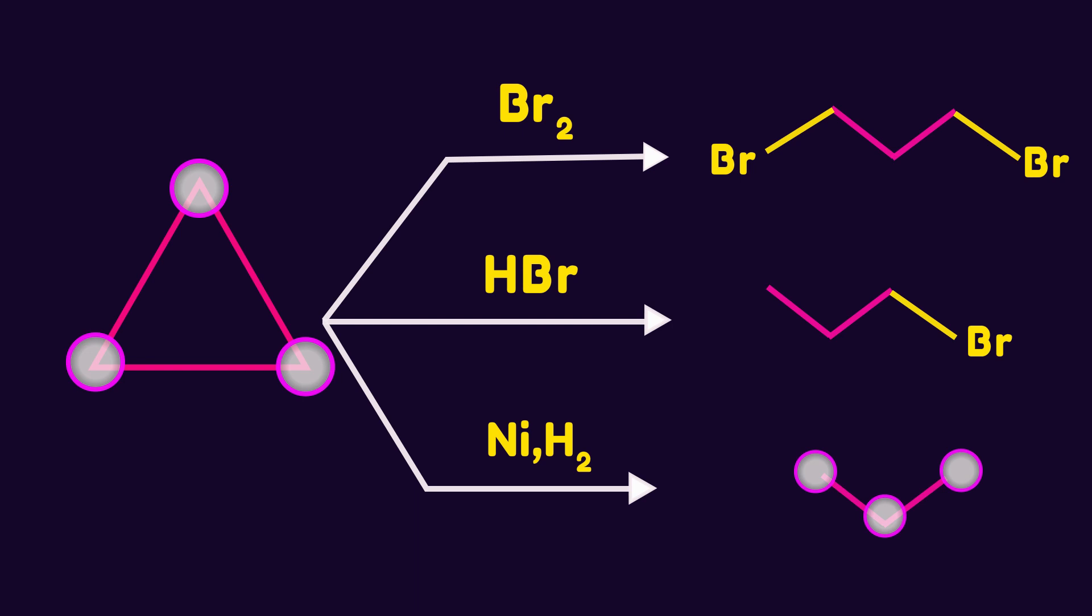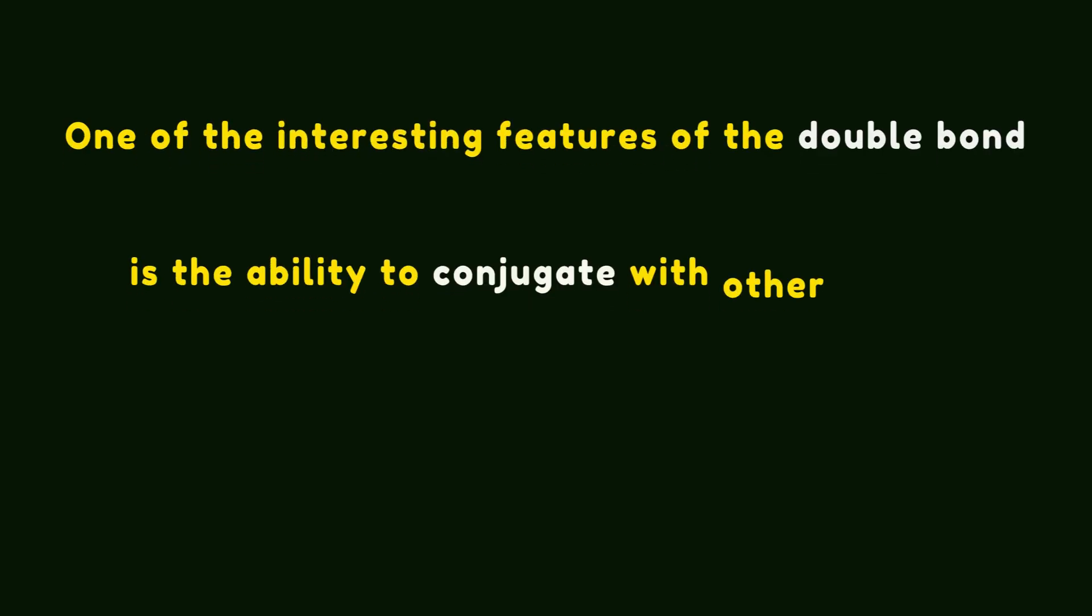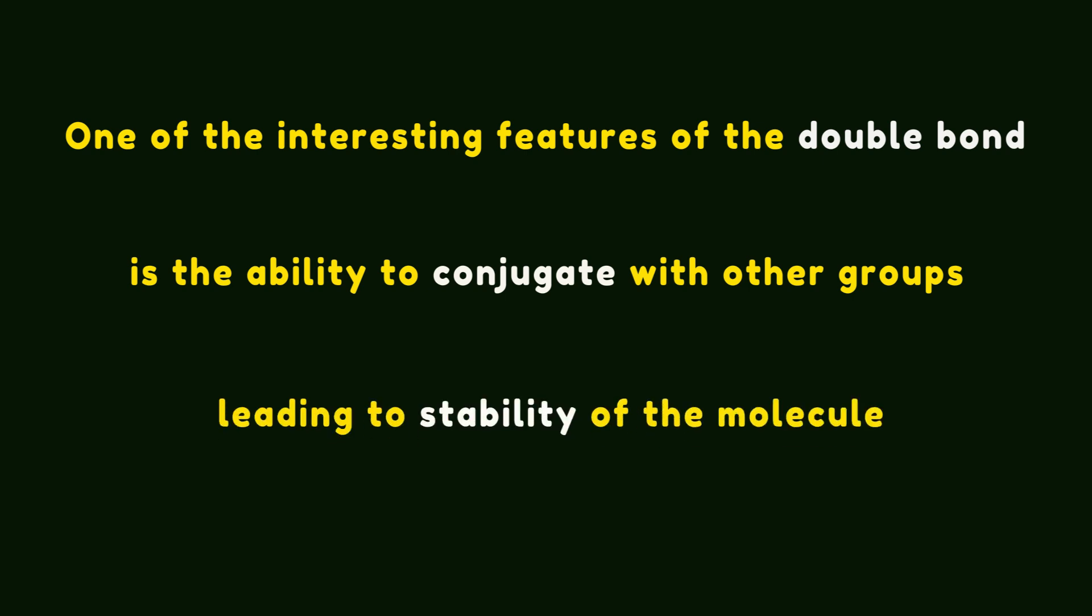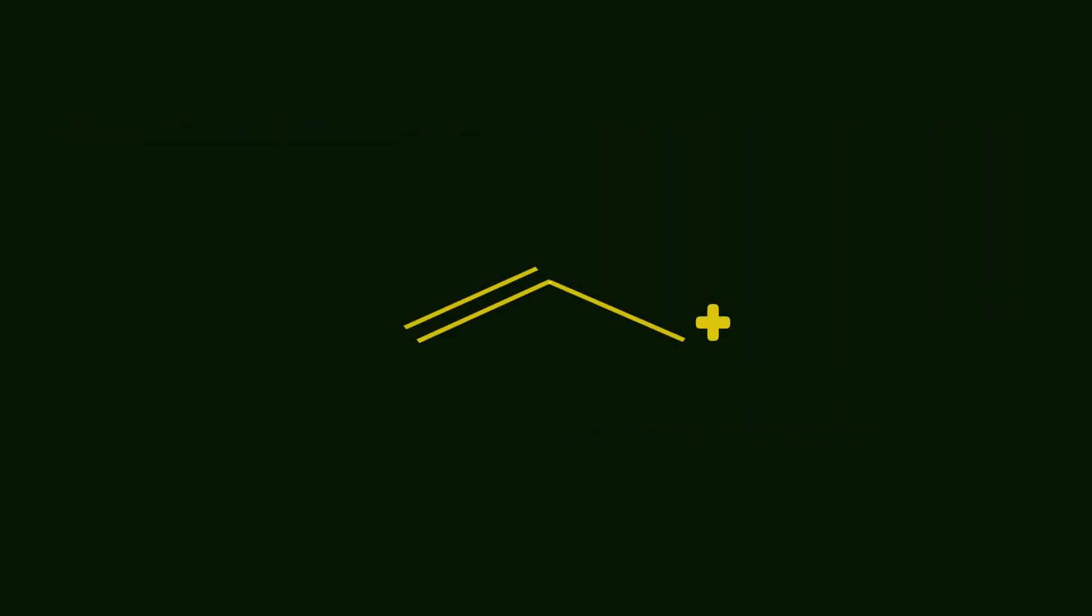Usually, we don't expect this reactivity for a saturated system. One of the interesting features of the double bond is the ability to conjugate with other groups, leading to stability of the molecule. For example, the empty p orbital of allylic carbocation interacts with the adjacent double bond. Because of this conjugation effect, allylic carbocation is stable. If you want to know more about the stability concept, check this video.